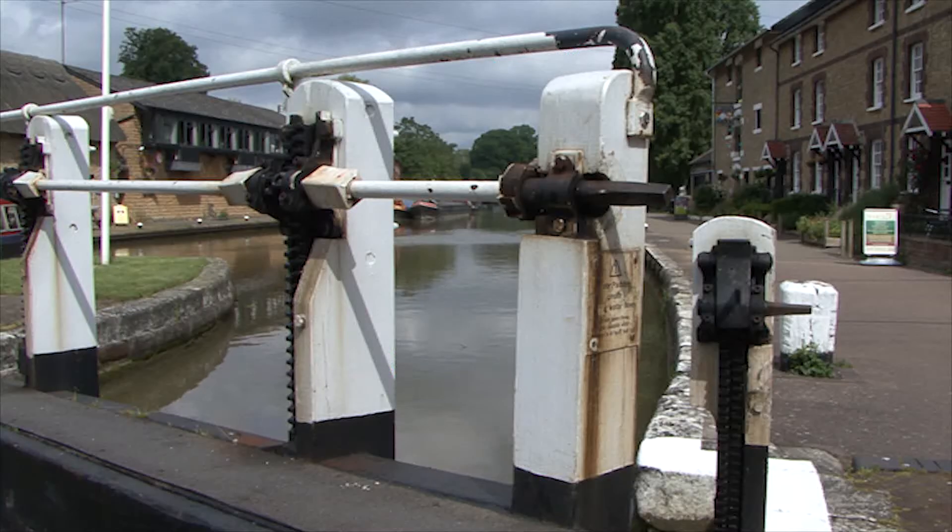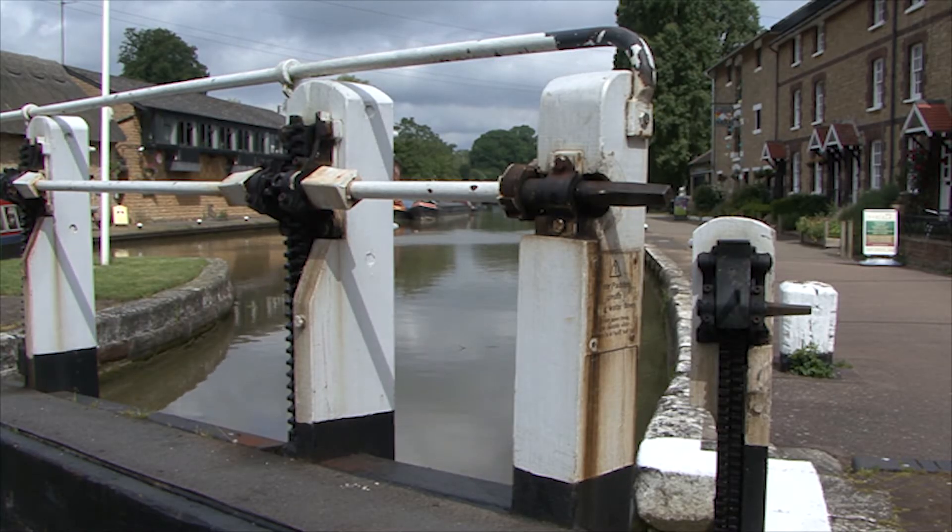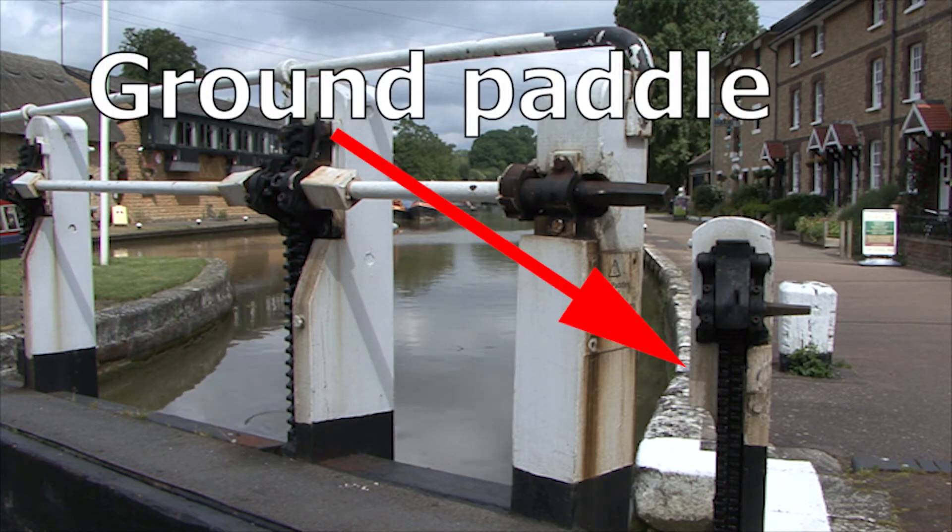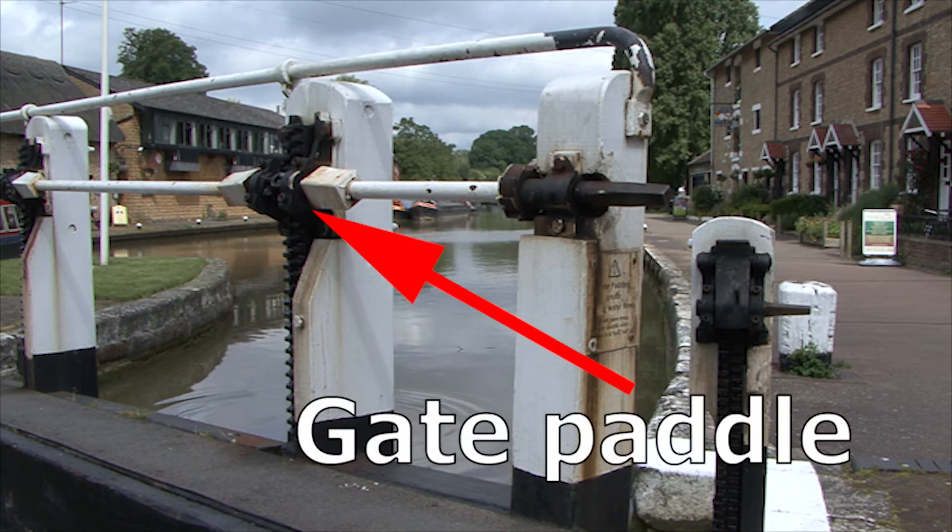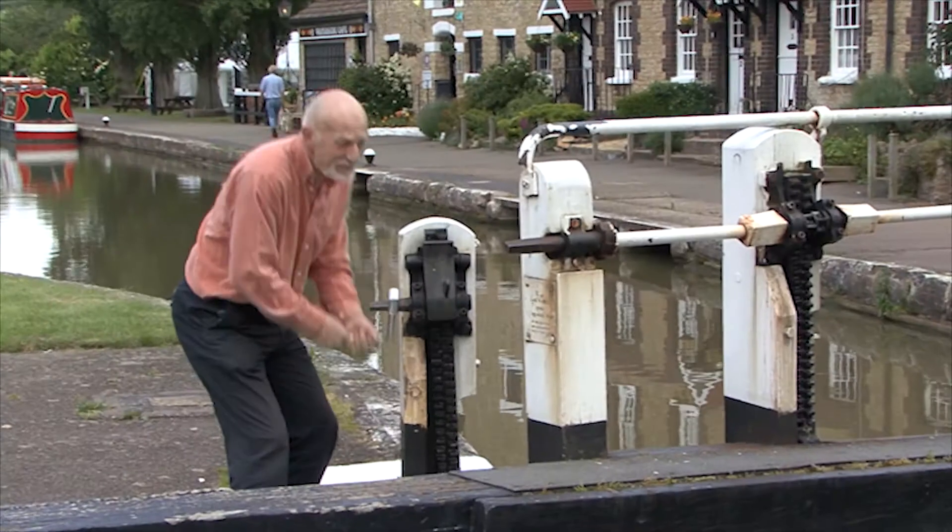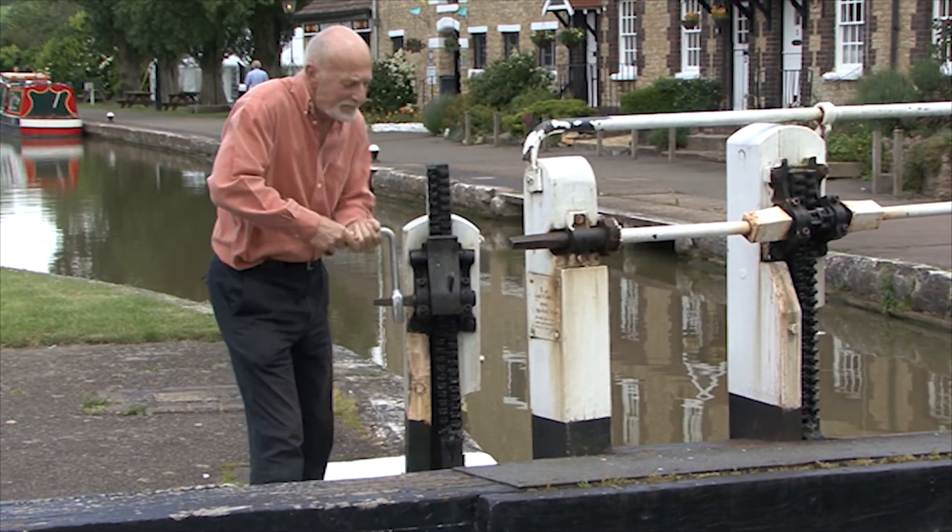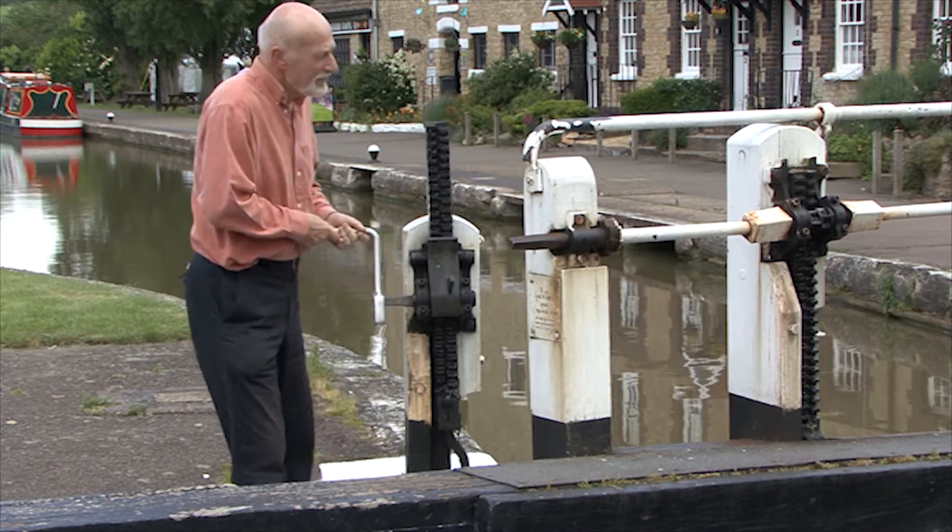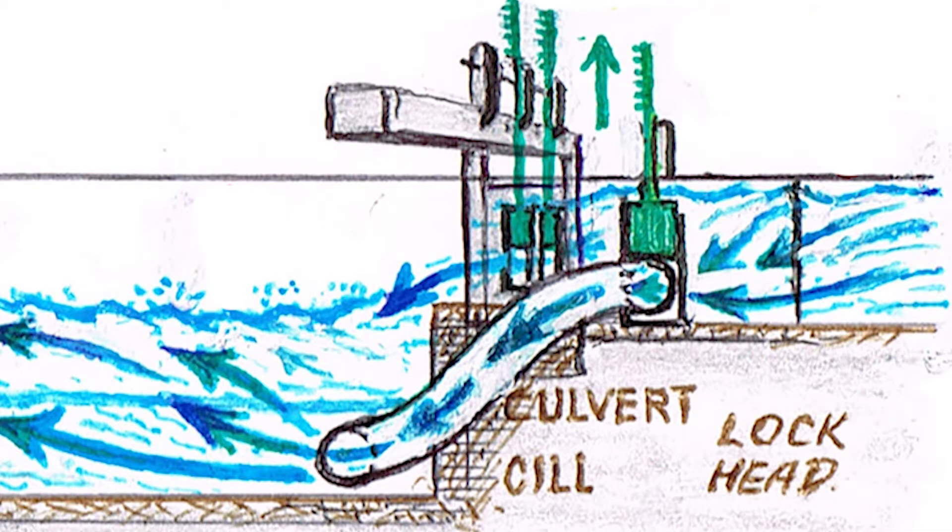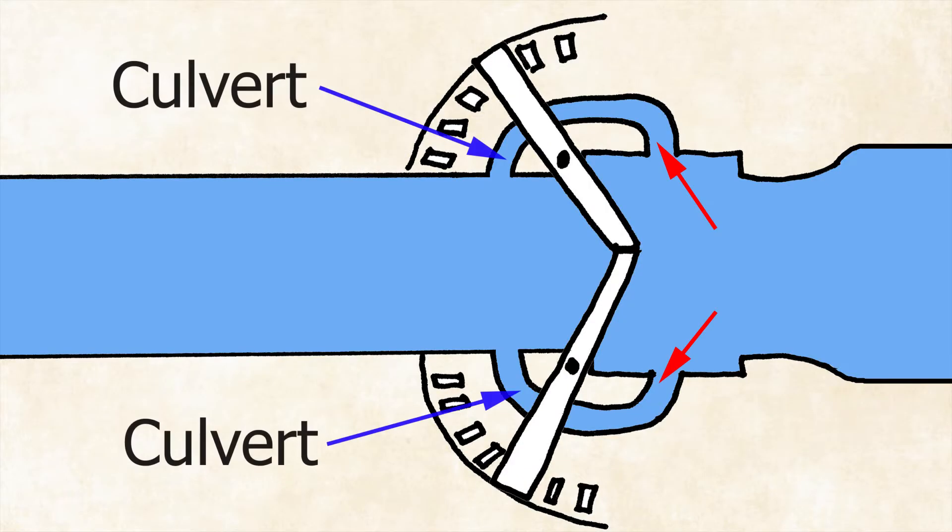At Stoke Bruin there are paddles controlling the side culverts, called ground paddles, and also on the gates themselves. The ground paddles should always be opened first to prevent water entering the boat. The culvert is a pipe in the upper part of the lock through which water runs when the higher level ground paddle is opened.